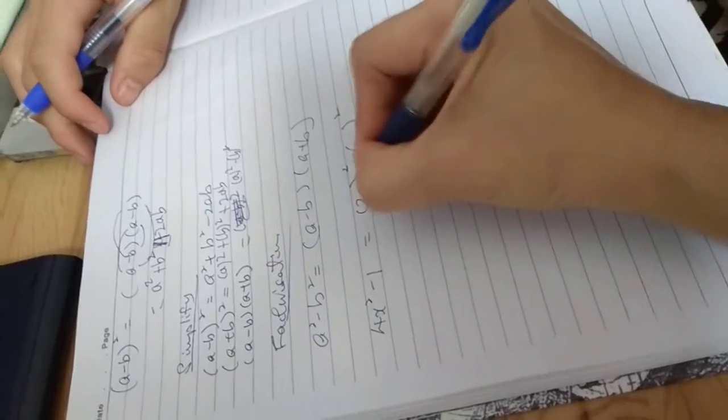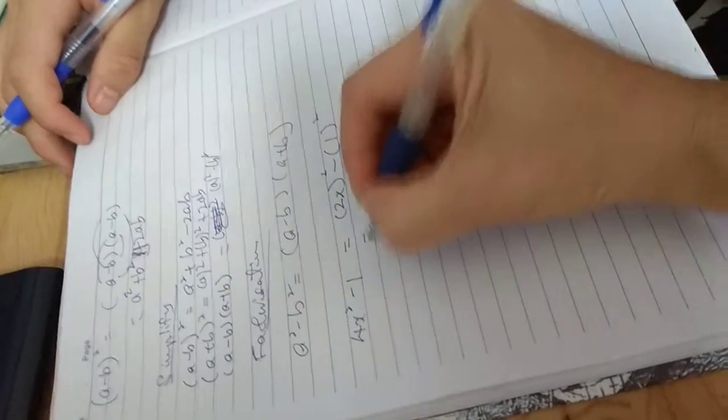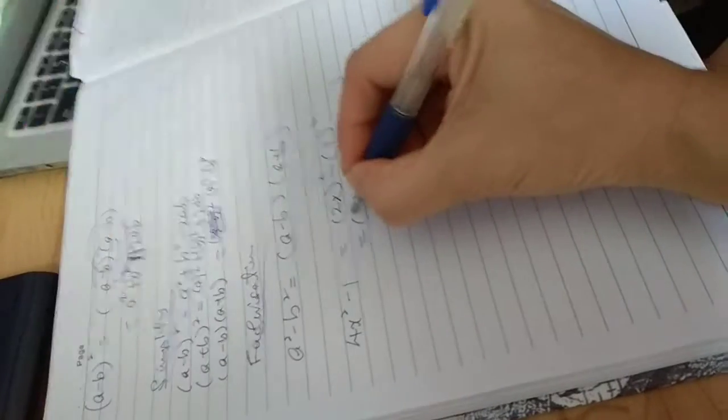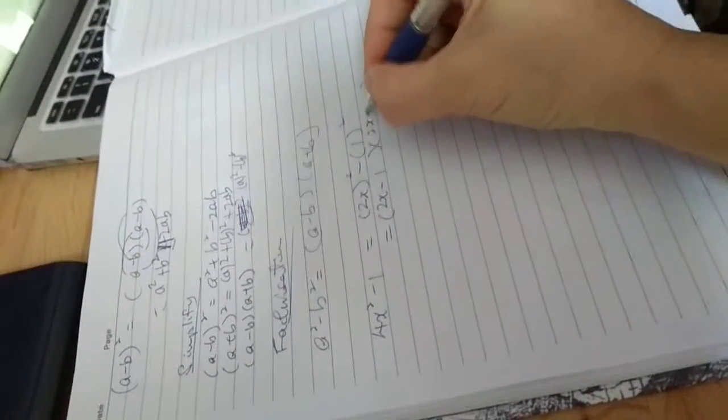4x squared become 2x. Very good. This is 1. So, answer will be 2x minus 1, 2x plus 1.